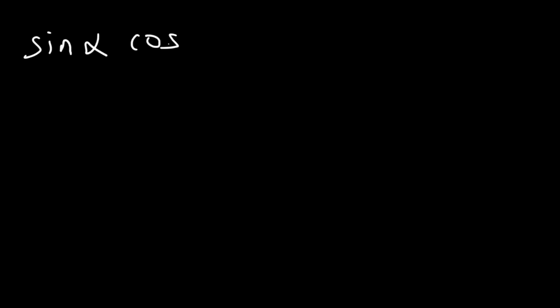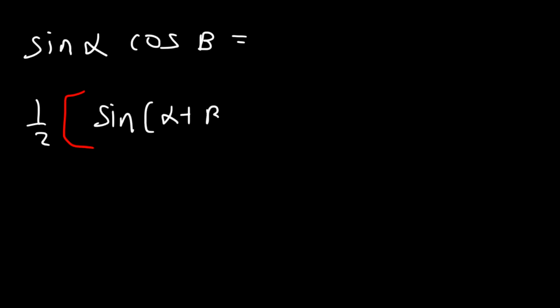Now the third one is sine alpha cosine beta, equal to one half. This time we're using sine instead of cosine, so it's sine(alpha plus beta) plus sine(alpha minus beta).